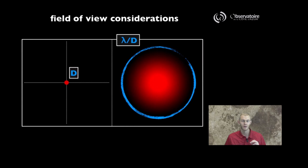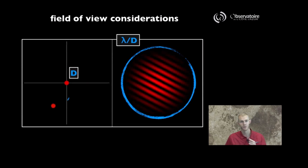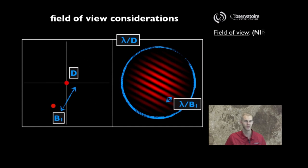It is within that lambda over d disk that when we start involving more than one telescope, we are going to form interference fringes. And the characteristic size of those fringes is, of course, lambda over B, where B is the distance that separates my two apertures.